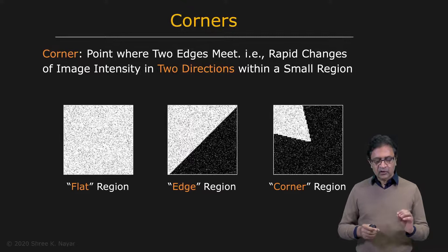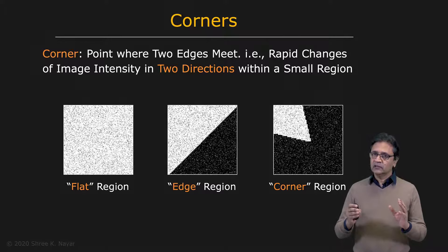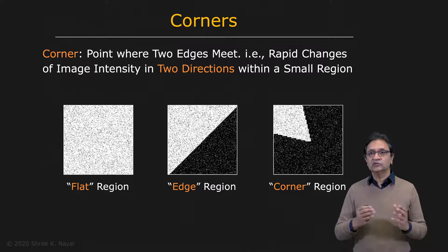Let's talk about how we can find corners in an image. First, let's describe what we mean by a corner. A corner is essentially a point where two edges meet. So unlike an edge, where you have rapid change in image intensity in one direction, if you place a window around a corner, you're going to get rapid change in image intensity in two directions.